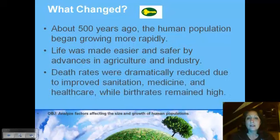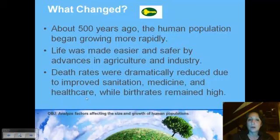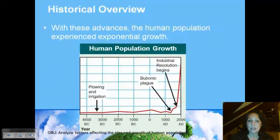The other thing that has changed is sanitation, medicine, and health care. We have improved the level of cleanliness, the type of medicine, and the medicines available in health care. That has decreased our death rates while our birth rates have remained high. So these are the things that are affecting the human population.